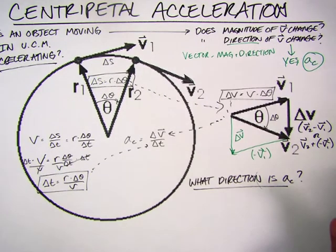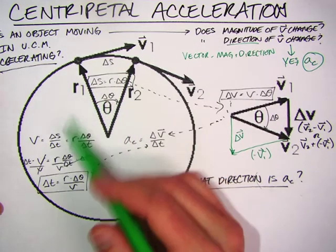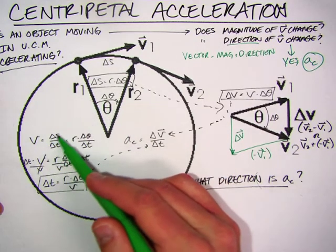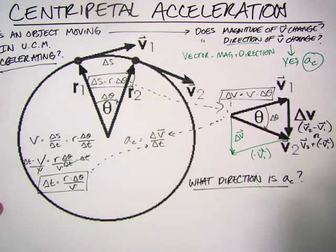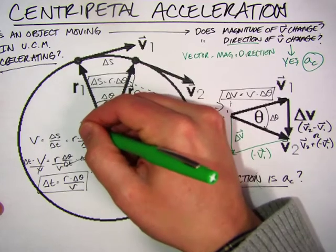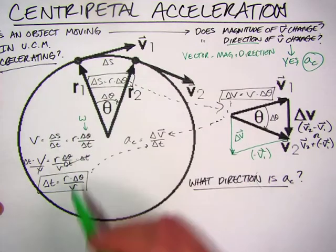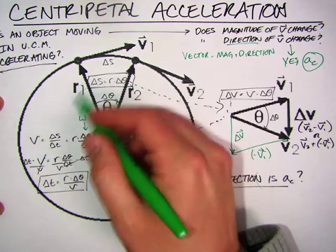So one thing we were able to derive from the previous example in the previous video was that that angular speed, which is delta S over delta T, is equal to R delta theta over delta T. So this is, remember that's omega, because R delta theta is equal to delta S.